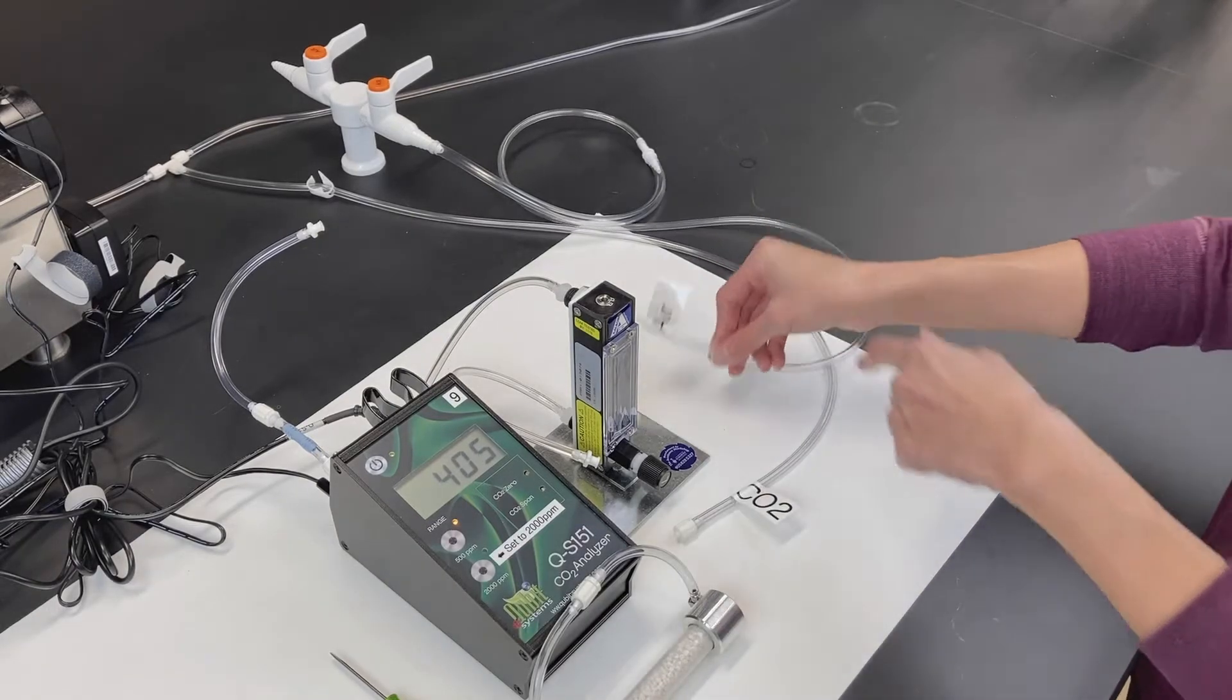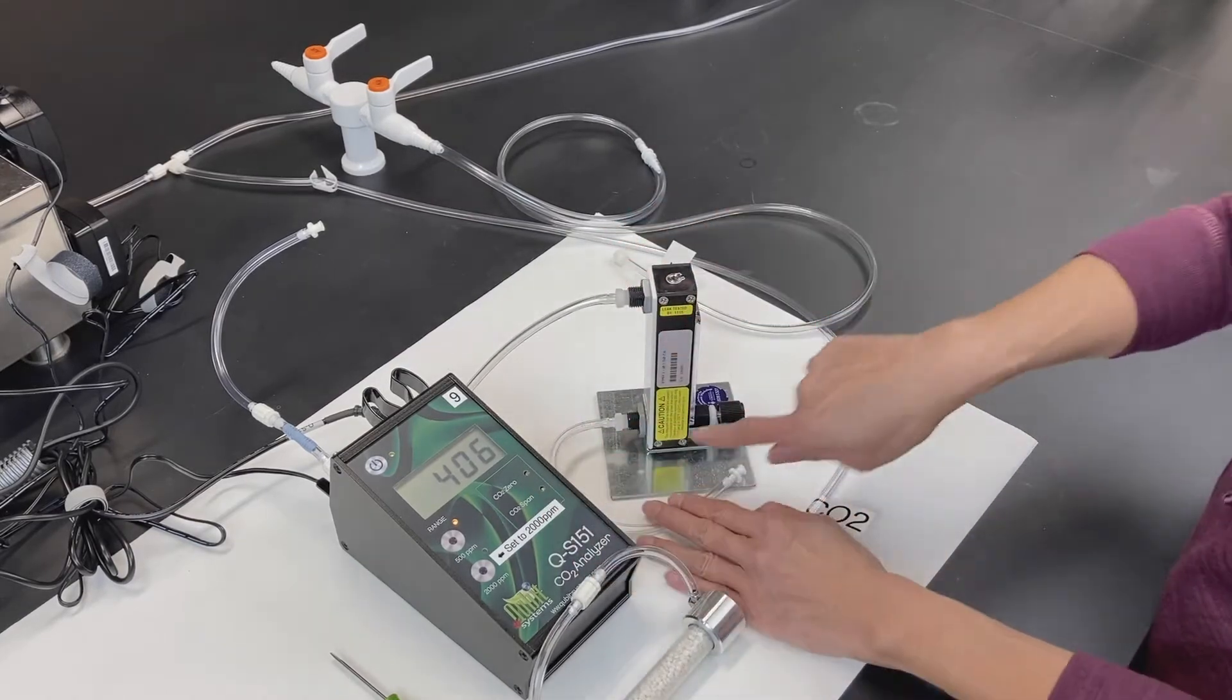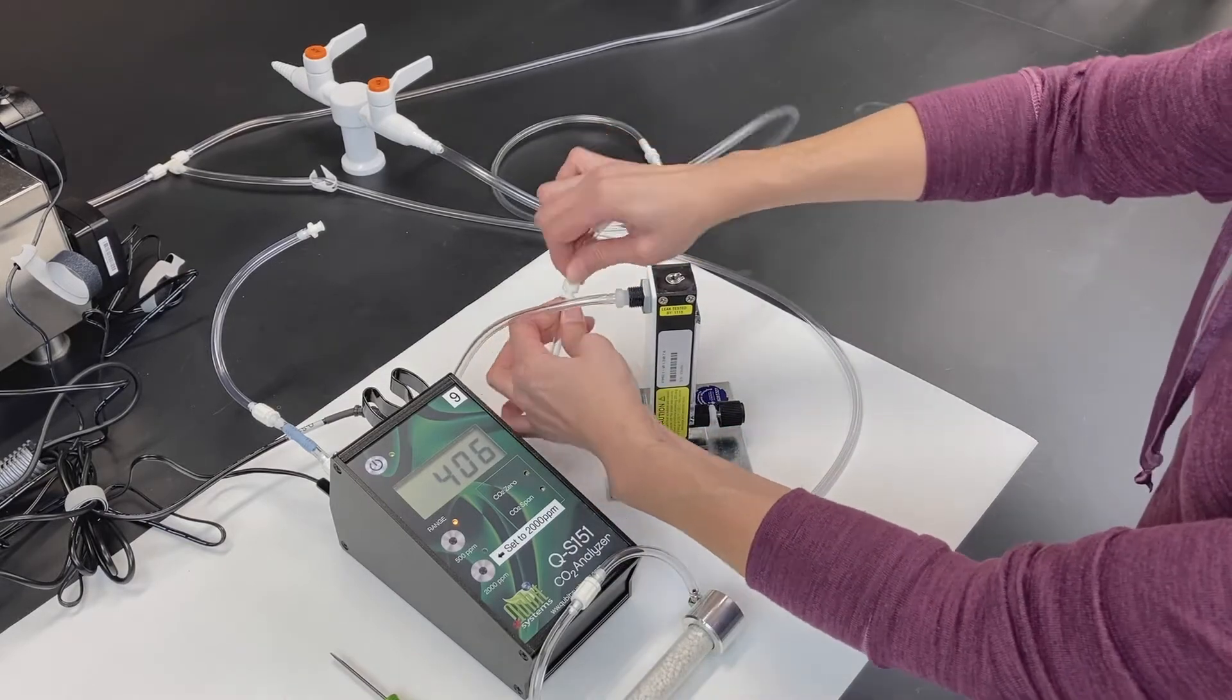You'll need an air line and a source of carbon dioxide at 1,000 parts per million. Begin by attaching the air line to the inflow port at the bottom of the flow meter.